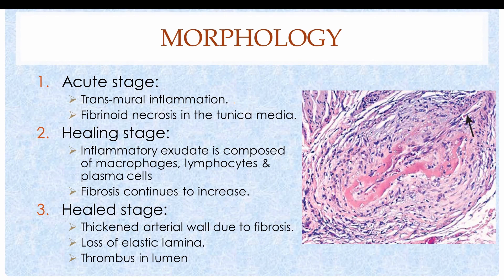The disease affects only part of the vessel circumference, most commonly at branching points, resulting in weakening of the arterial wall. There may also be aneurysm formation at the site of vasculitis.